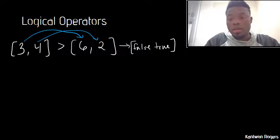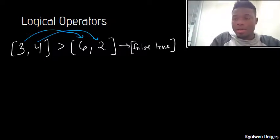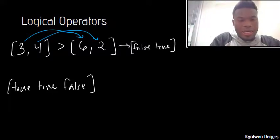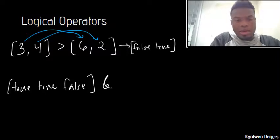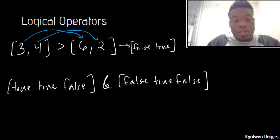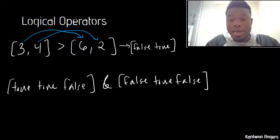We can also do this with all of our other logical operators like ands and ors. If I had a vector of trues and falses, let's say I had true, true, false, and I wanted to and that with false, true, false, it's going to go element by element doing this and operation.